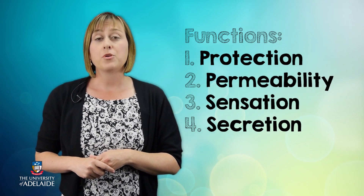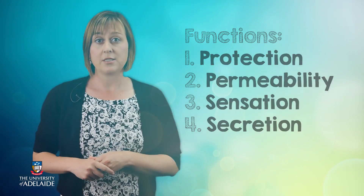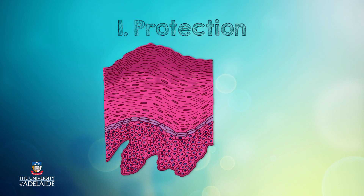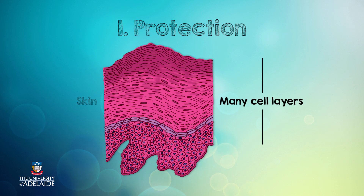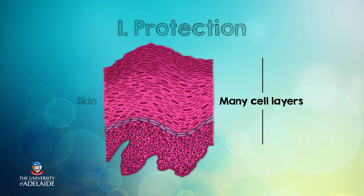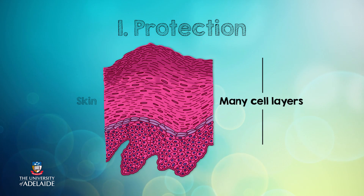Epithelial tissue also produces secretions. Our skin is a great example of an epithelial tissue that protects our bodies — it is made up of lots of layers of cells for greater protection.